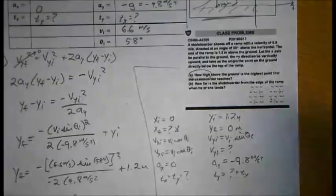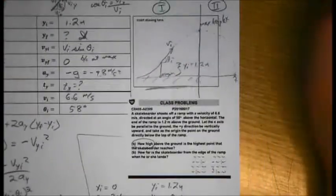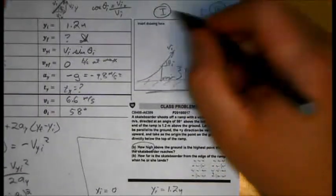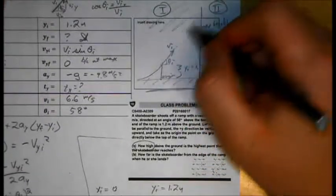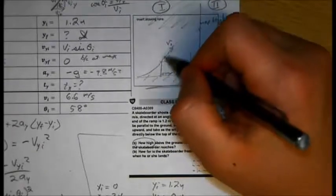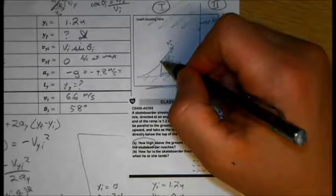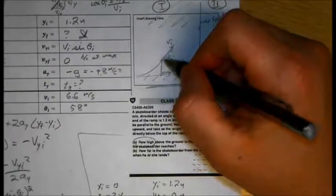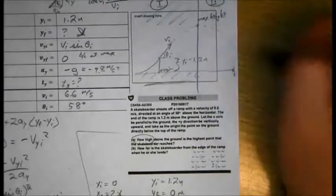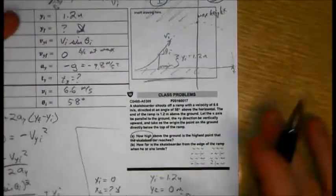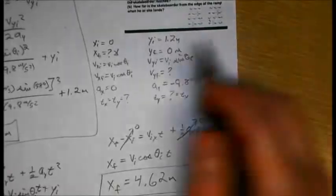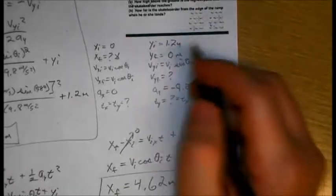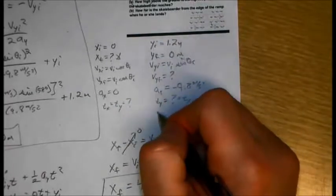For the second part though, this is where we work this problem in two stages. Part A is just this initial stage, leaving the ramp and getting to the maximum height. Part two though, we're going to go back to the origin where this skateboard leaves the ramp but then follow it all the way until it strikes the ground over here. So since we've redefined the problem, we have to redefine all of our x and y quantities.